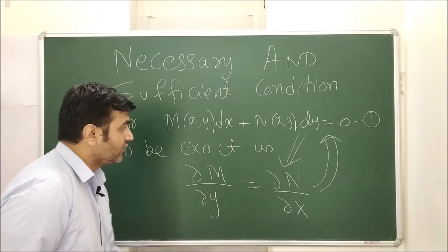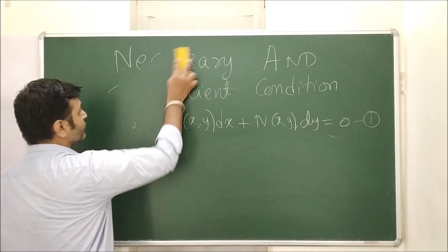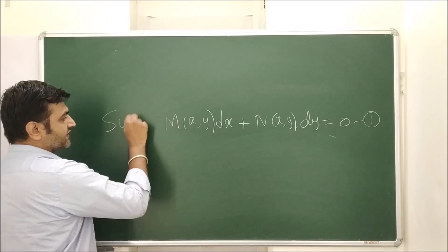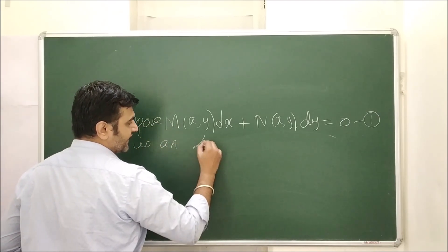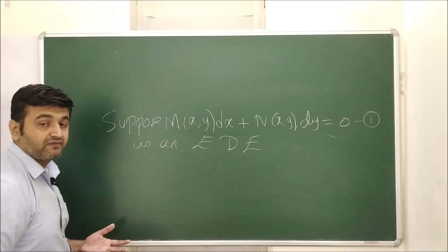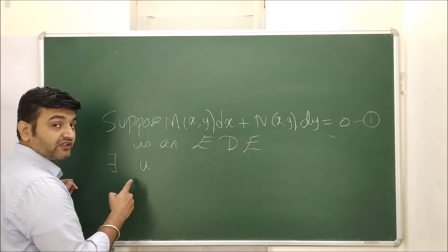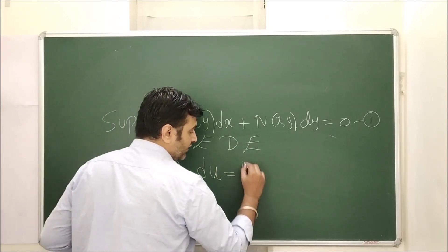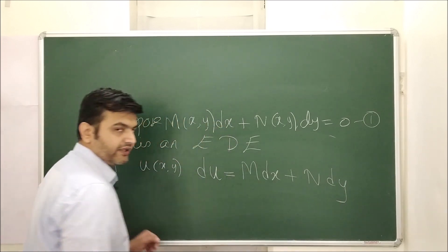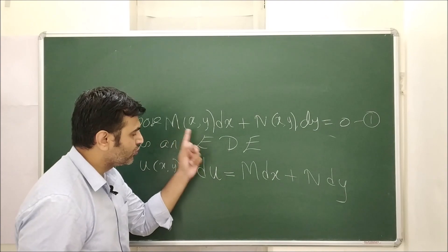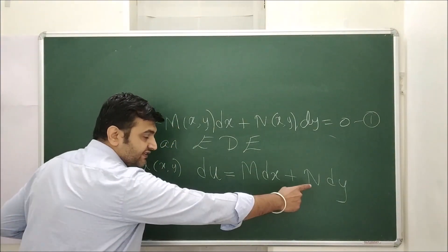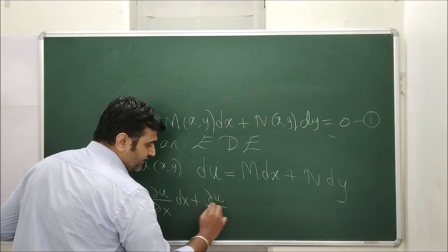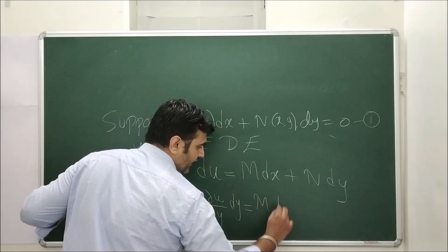So let's prove this. Suppose equation 1 is an exact differential equation — that is given to us. We assume equation 1 is exact and will prove that the two partial derivatives are equal. By definition of exactness, there exists a differentiable function u(x, y) such that its total derivative du equals M dx + N dy. By the definition of total derivative, du = (∂u/∂x)dx + (∂u/∂y)dy, and this equals M dx + N dy.